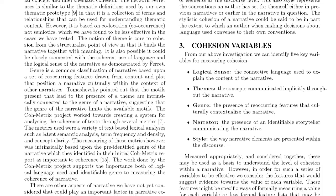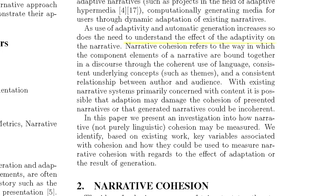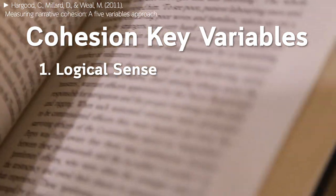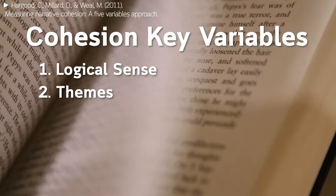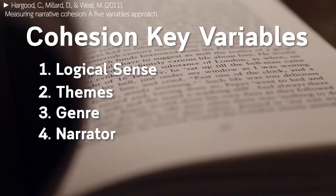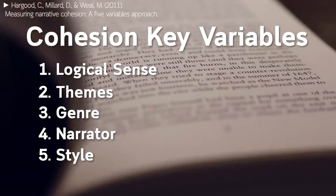This paper seems to be exploring narrative generation — using machines to help generate a story — so it's not directly related to video games, but let's see if we can extract something useful. They say that narrative cohesion refers to the way in which the component elements of a narrative are bound together in discourse through coherent use of language. They identify five key variables for measuring cohesion: logical sense, or the language used; themes, or the concepts communicated implicitly; genre, the presence of recurring features that culturally contextualize the narrative; narrator, or the presence of an identifiable storyteller communicating the story; and style, the way the narrative elements are presented within a discourse.